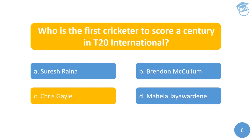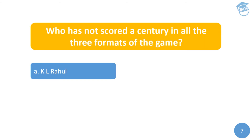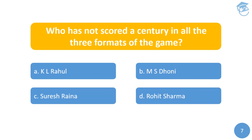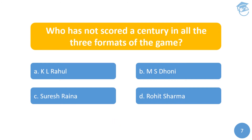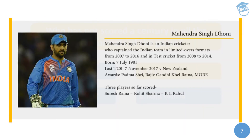Moving on to the next question: who has NOT scored a century in all three formats of the game? Your options are A) KL Rahul, B) MS Dhoni, C) Suresh Raina, or D) Rohit Sharma. The answer is MS Dhoni — Mahendra Singh Dhoni has not scored a century in T20 international cricket, whereas all the other three players have scored centuries in all formats.